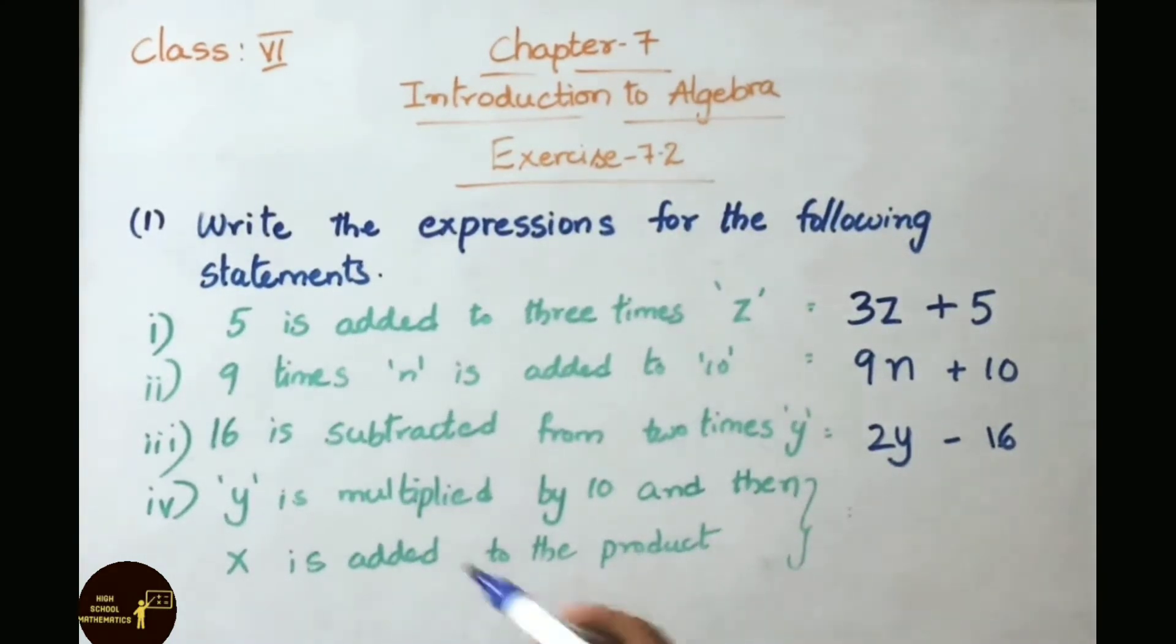See fourth one. Y is multiplied by 10, that is 10Y. And then X is added to the product, plus X. So the rule is 10Y plus X.